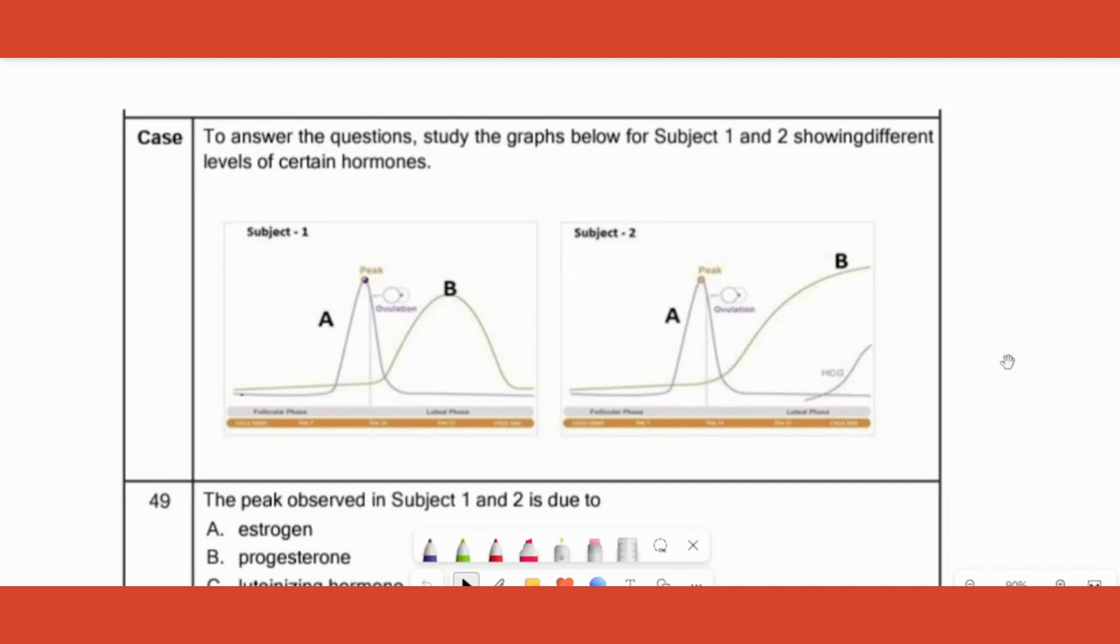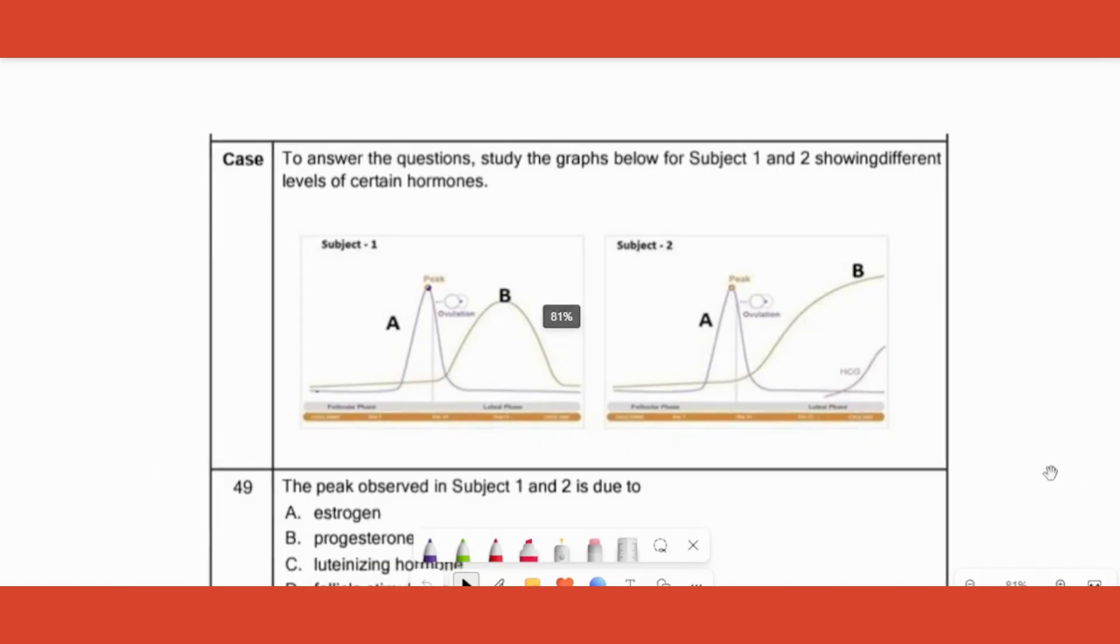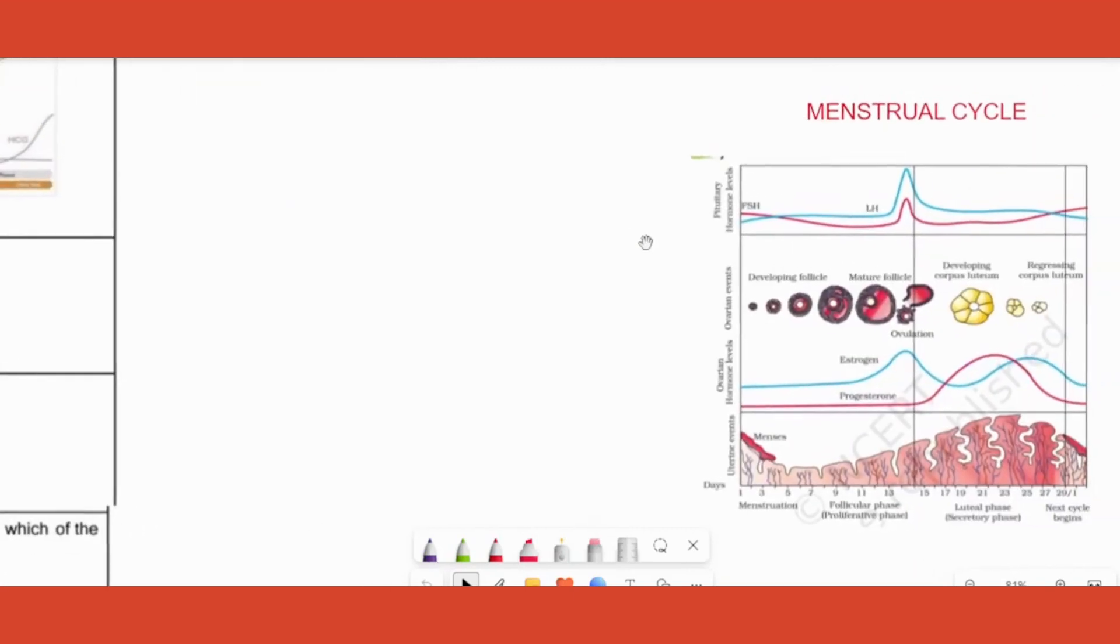Here there are certain graphs of two people, subject one and subject two given, and a lot of questions are following. This comes under case-based question which is a compulsory question. If we are not very clear with the concept, we may not be able to answer this. So let's do a quick recap of the concept itself, that is menstrual cycle, and then let's quickly come back to the questions.